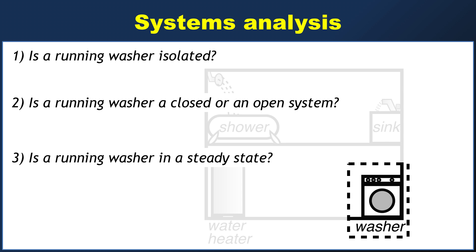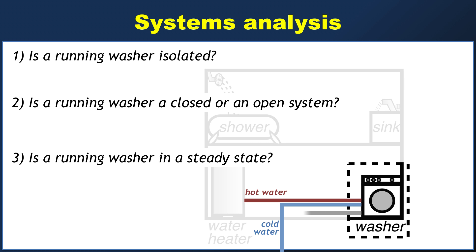An important first step in answering any of these questions is to consider what's going in or coming out of our system. Well, if you want to do the wash you probably need some hot water and some cold water. That'll get you through the first load of laundry, but you'll get diminishing returns pretty quickly unless you also have some way of getting rid of the dirty water.